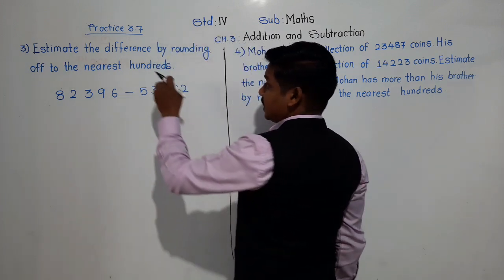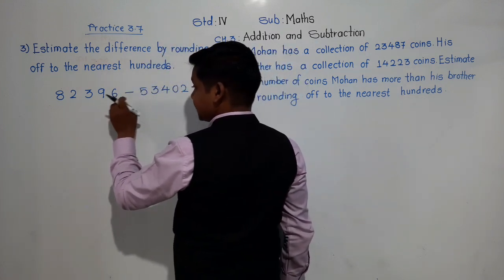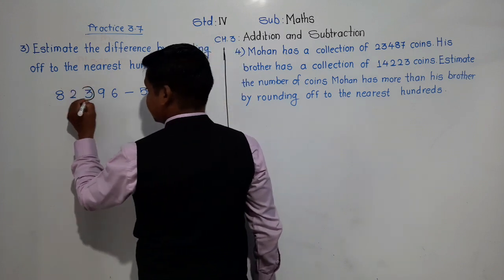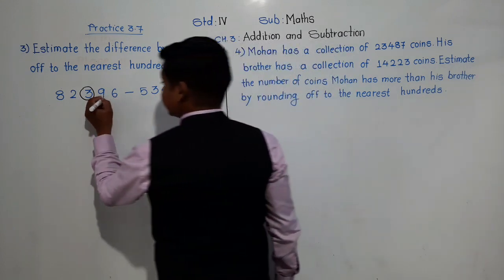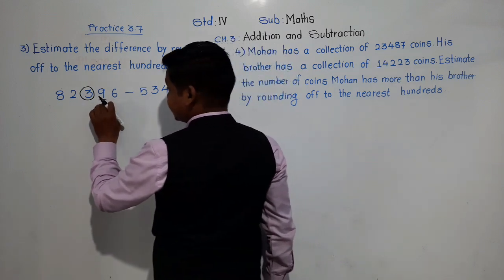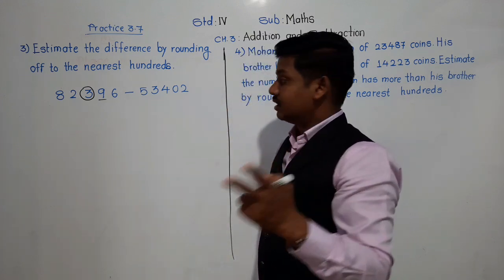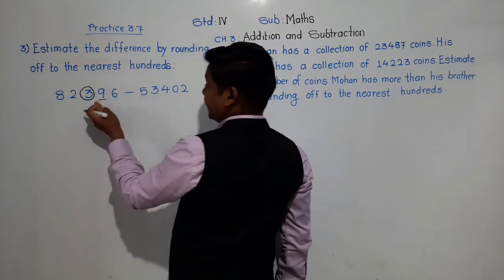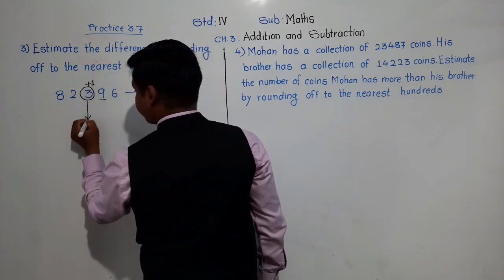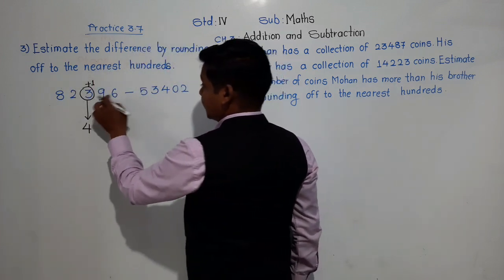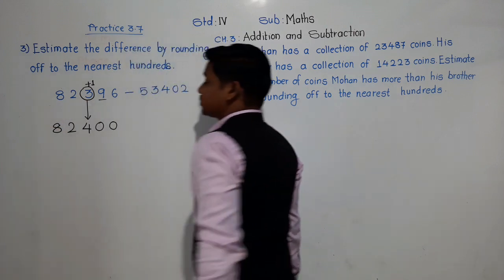As you know how we round off to the nearest hundreds, first we will circle the digit at the hundreds place. In 82,396, there is 3 at the hundreds place. Now check the next digit — the next digit is 9. Since 9 is 5 or more, we apply the second rule and add 1. So 3 plus 1 becomes 4. For the next two digits put 0, and previous digits write as they are. So it becomes 82,400.